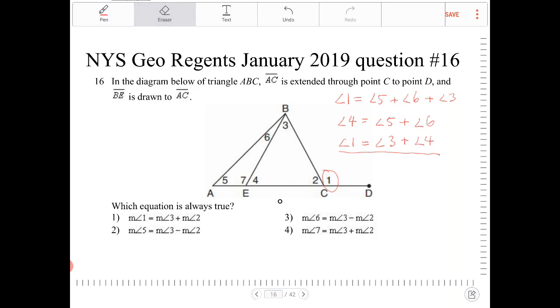So I overlooked one other case over here, and that is angle 7 here is exterior to triangle EBC. So angle 7, yes, it does equal 3 plus 2. So that's option 4.